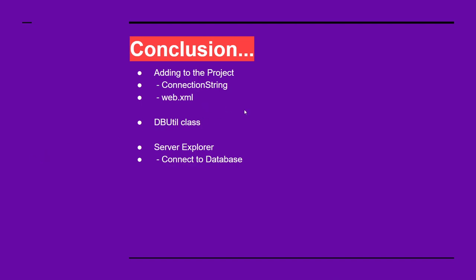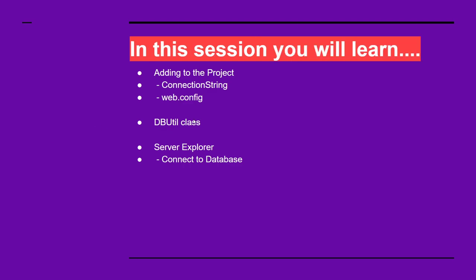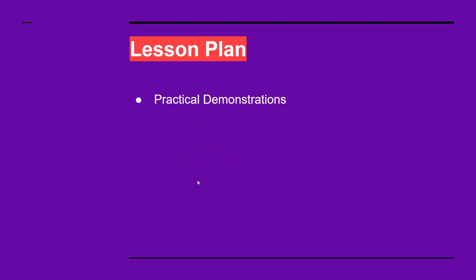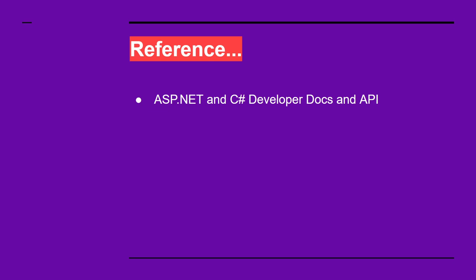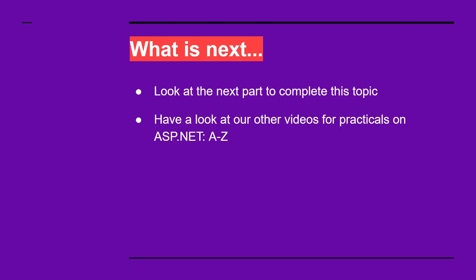In conclusion, you learned about adding the connection string to web.config, creating the DBUtils class, and connecting to the database from Server Explorer in Visual Studio. In the next part, we will create the home page and the master page of this web application. It's a complete project from A to Z, and you will learn how real-world developers build complete projects. Make sure to have a look at the other parts to gain that experience and get the opportunity to work in the industry.